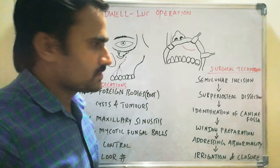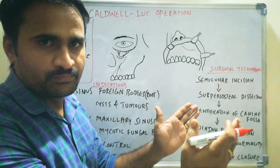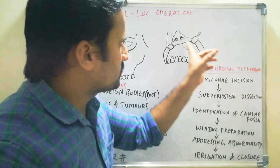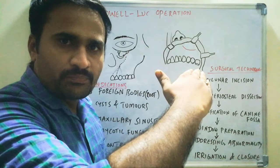The incision extends from the Maxillary Canine up to the first or second molar depending on the situation — anteriorly from the Maxillary Canine to the Maxillary Second Molar. This is the soft tissue Semilunar Incision. Once you incise the soft tissue, the next step is Subperiosteal Dissection — you completely elevate the mucosa subperiosteally.